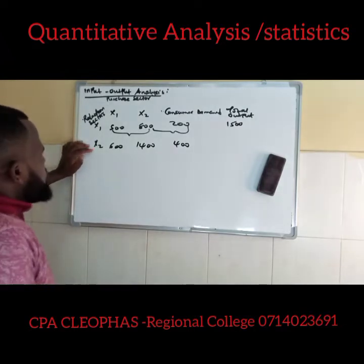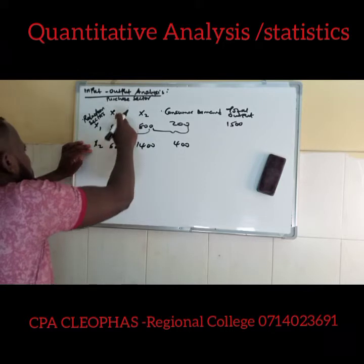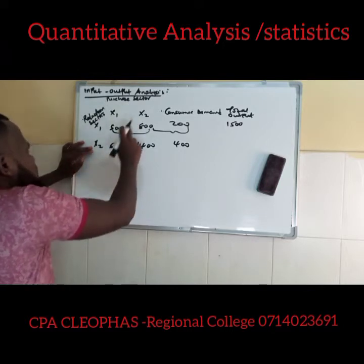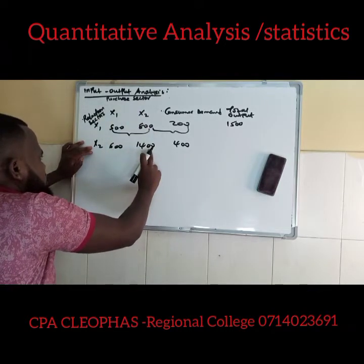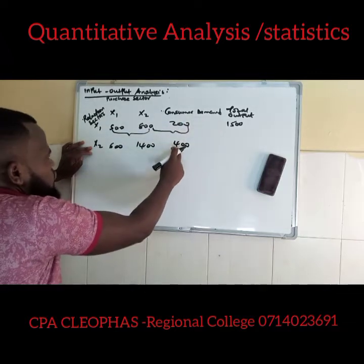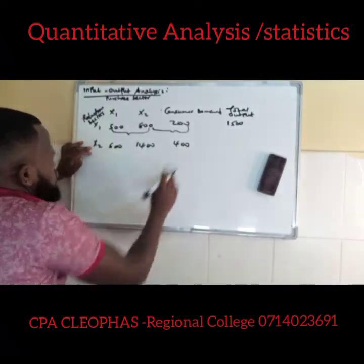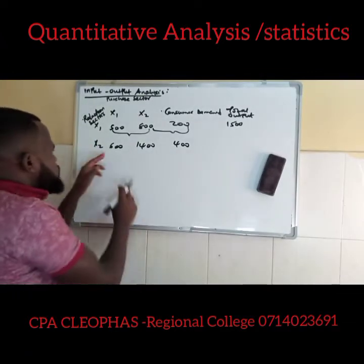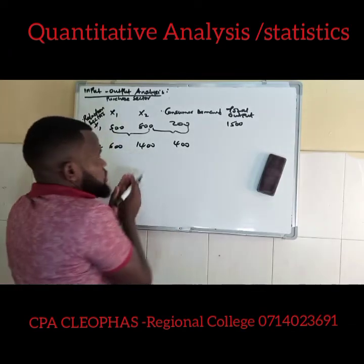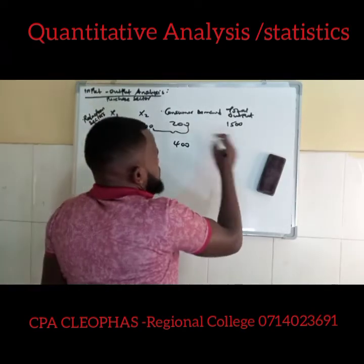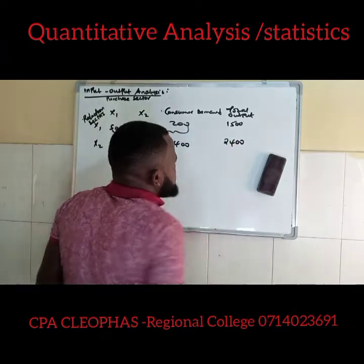For sector X2: X1 purchased 600 from it, X2 itself purchased 1400, and the final consumer purchased 400. So total output of X2 is 600 + 1400 + 400 = 2400 units.